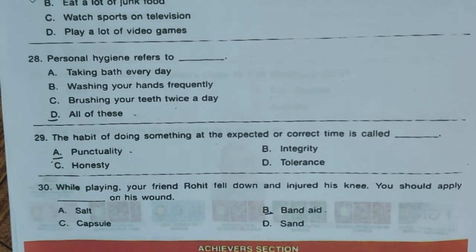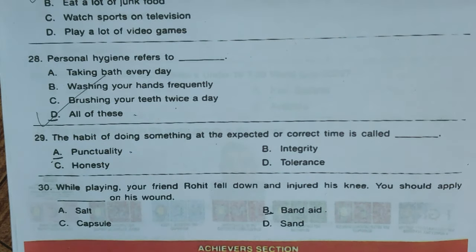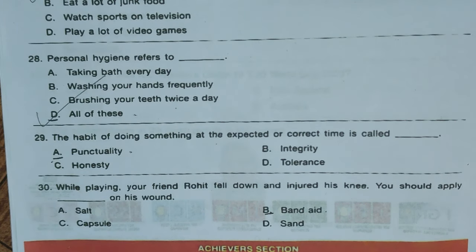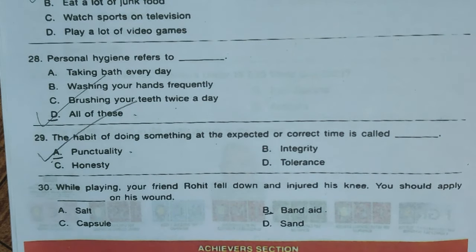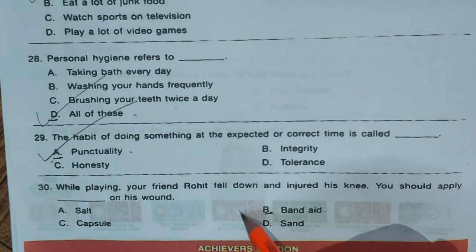Question 28: Personal hygiene refers to dash. Options: A) taking a bath every day, B) washing your hands frequently, C) brushing your teeth twice a day, D) all of these. Correct answer is D, all of these. Question 29: The habit of doing something at an expected or correct time is called dash. Options: A) punctuality, B) integrity, C) honesty, D) tolerance. Correct answer is A, punctuality. Question 30: While playing, your friend Rohit fell down and injured his knees. You should apply dash. Options: A) a bandage, B) a band-aid, C) a capsule, D) an ointment. Correct answer is B, band-aid.